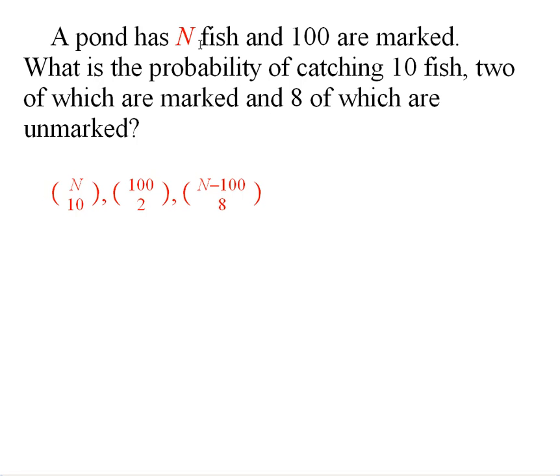And the situation is this. You have a pond that has N fish, and you don't know what N is. 100 of these fish are marked, and the remaining number of fish are not marked.